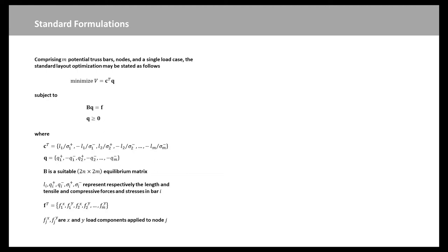Secondly, each member must have a cross-sectional area that is large enough to carry the force being transmitted. This is calculated based on the given permitted limiting material stress in tension and compression. Comprising M potential truss bars, N nodes, and a single load case, the standard formulations are shown in this slide.